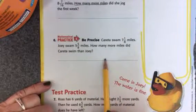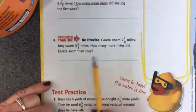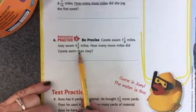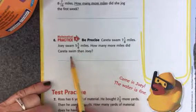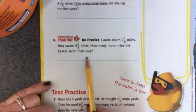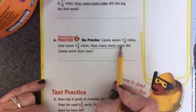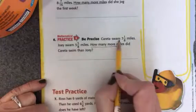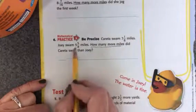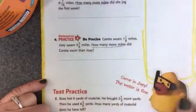Number 6. Coretta swam 7 and 1 8ths miles. Joey swam 5 and 5 8ths miles. How many more miles did Coretta swim than Joey? I noticed that again. How many more? But I need to start with the big number 7 and 1 8ths and subtract 5 and 5 8ths.